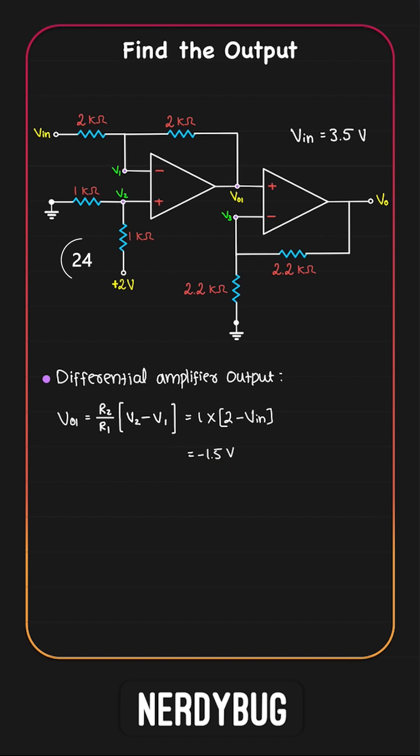The next stage is a non-inverting amplifier. Its gain will be 1 plus R1 by R2. Then the final output is going to be 1 plus R1 by R2 multiplied by the input V01 negative 1.5V. So the output becomes minus 3V.